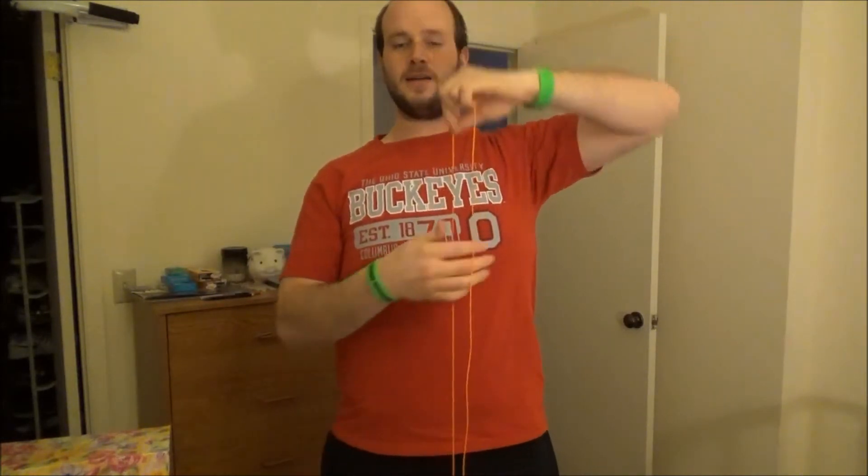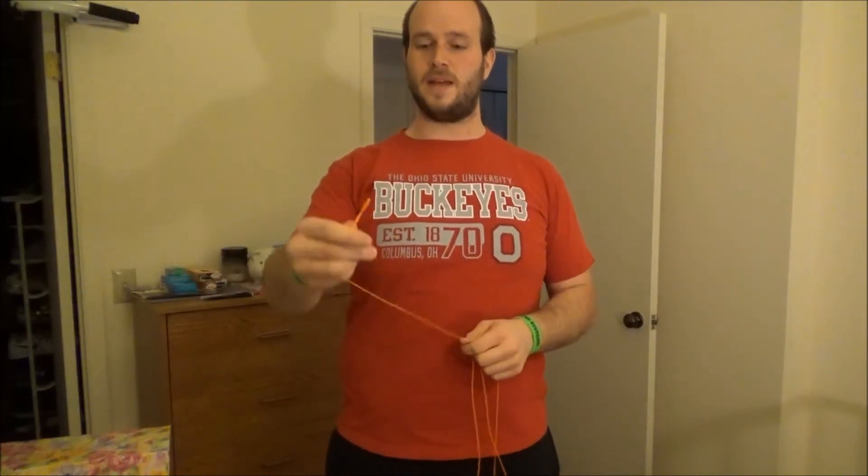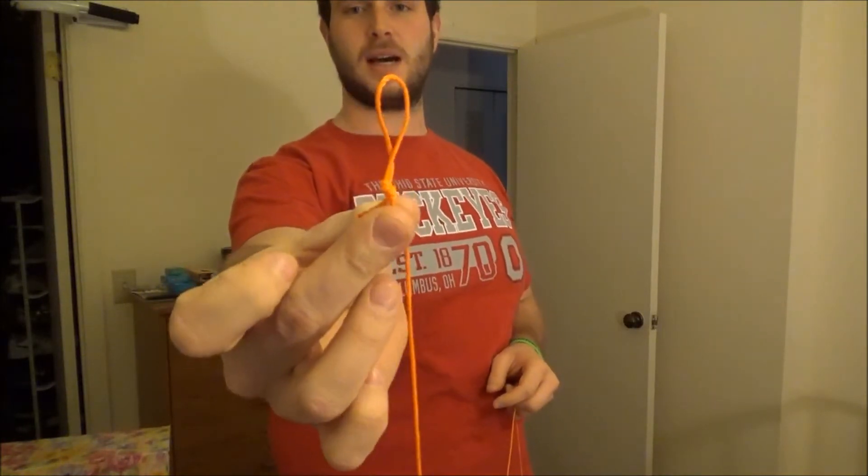You see how this line is straight and this one that doesn't have any weight attached to it just kind of floats and is not completely straight. So, that is why we are going to put weight at the bottom. On the other end, put a little loop. And I just tied a nice little knot in there.